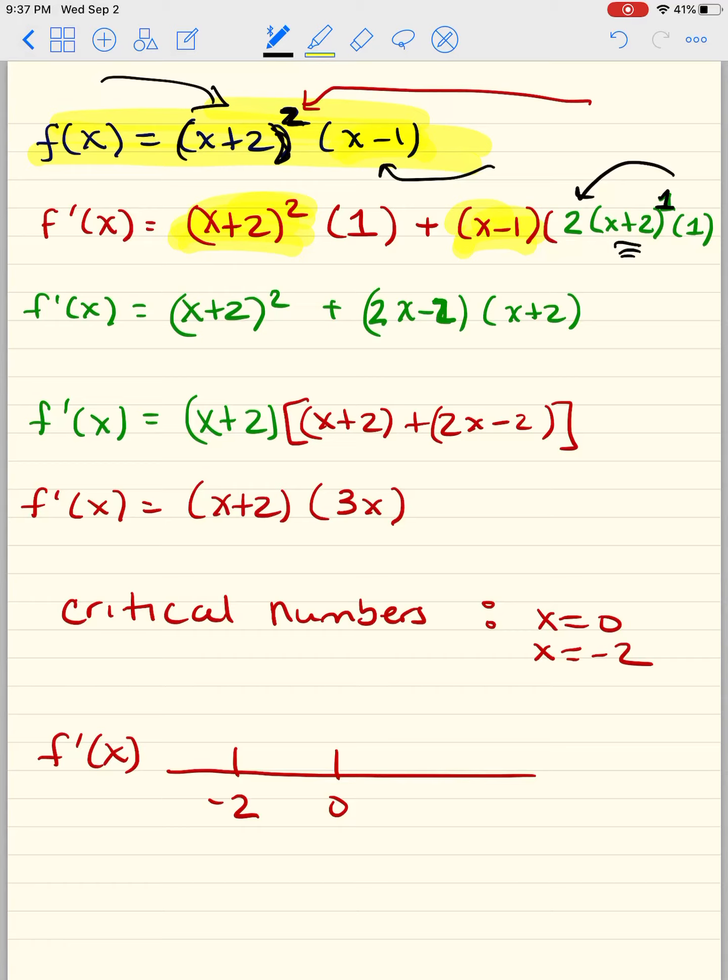Alright, so once I do this here, I notice something about x plus 2 squared times 1 plus x minus 1 times 2 times x plus 2 to the first. Anytime you have a problem like this, you must factor out that x plus 2, okay? Now we can only take 1 out because this one has 2 but this one only has 1, so we're factoring it. So what I do before I factor it is I take this 2 right here and I times that by 2x minus 2.